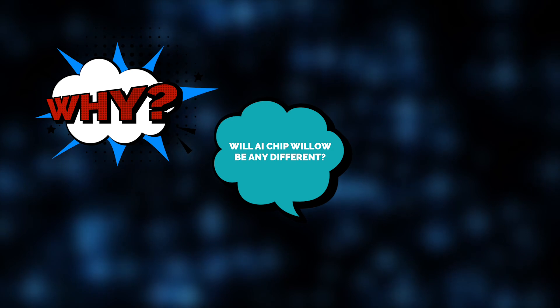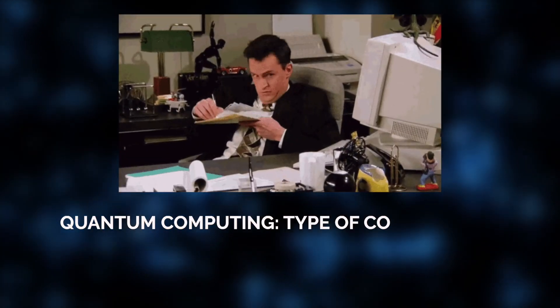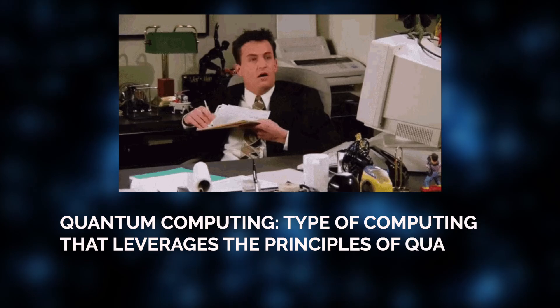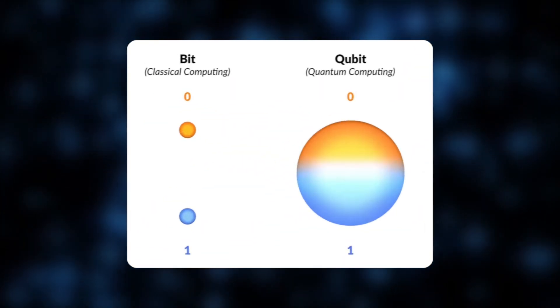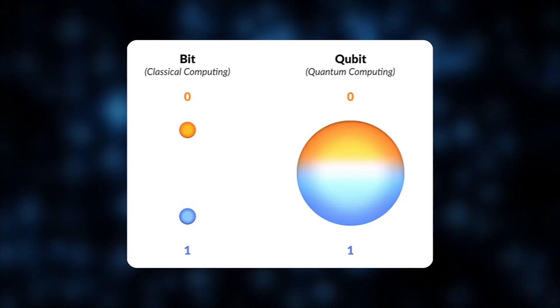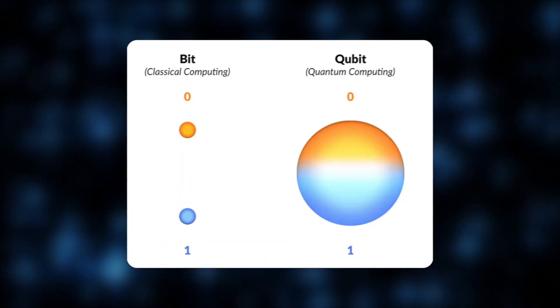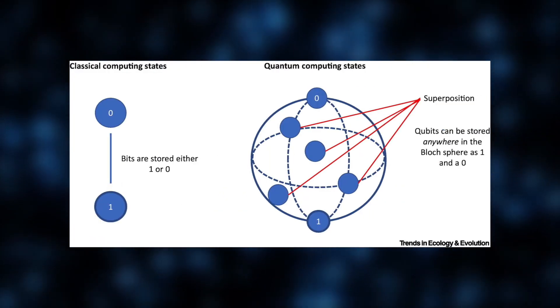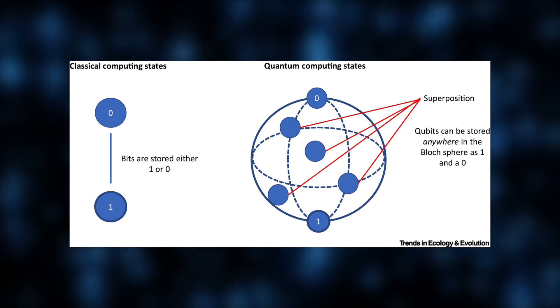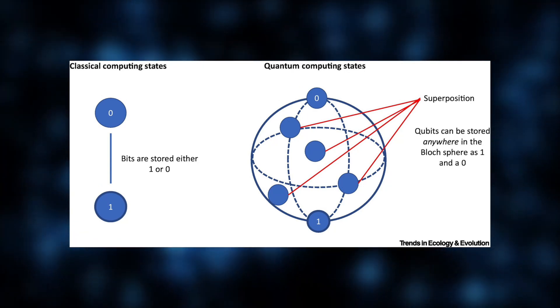But first, let's go back and define what quantum computing is. Quantum computing is a type of computing that leverages the principles of quantum mechanics to process information. Unlike classical computers, which use binary bits to represent data, quantum computers use quantum bits, or qubits, which can exist in a state of superposition. A qubit can behave like a classical bit, storing either a 0 or a 1, but it can also be a weighted combination of both 0 and 1 at the same time.